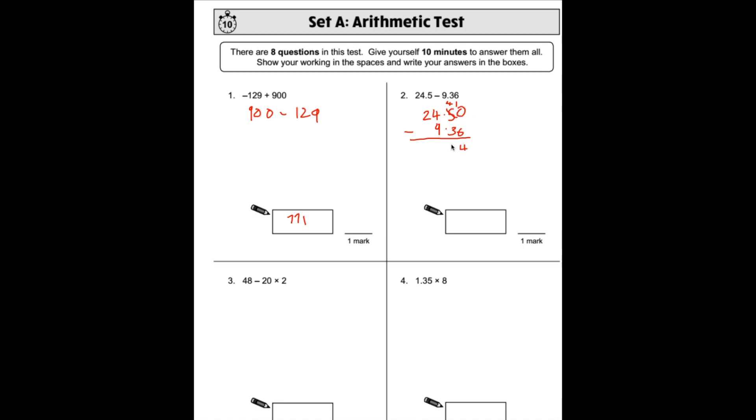Now we can do 10 subtract 6 which is 4. 4 subtract 3 which is 1. We put our decimal point in. 4 take away 9 we can't do so we're going to borrow from here. 14 subtract 9 is 5, and 1 subtract nothing is 1. So our answer for this one is 15.14.